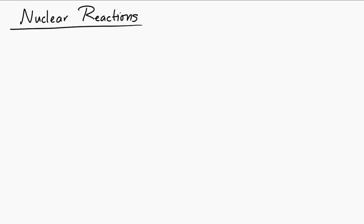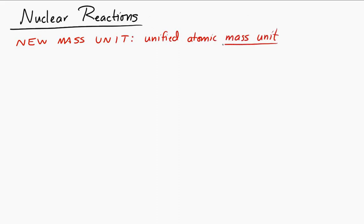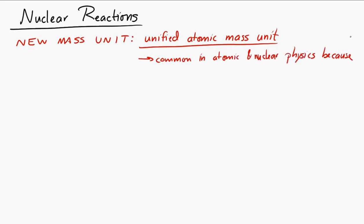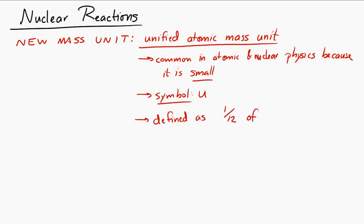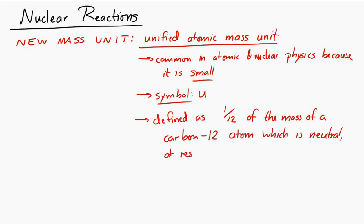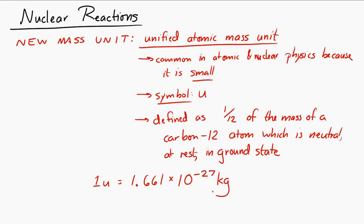Let's take a look at nuclear reactions. We'll start out by defining a new mass unit called the Unified Atomic Mass Unit. It's a common unit used in atomic and nuclear applications because it's very, very small. We represent it with the symbol lowercase u. It's defined as one twelfth of the mass of a carbon-12 atom that is neutral, at rest, and in its ground state. One Unified Atomic Mass Unit is equal to 1.661 times 10 to the minus 27 kilograms.